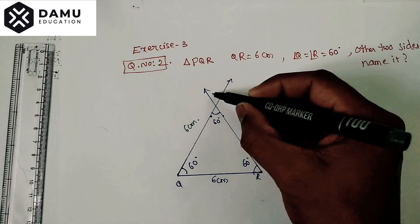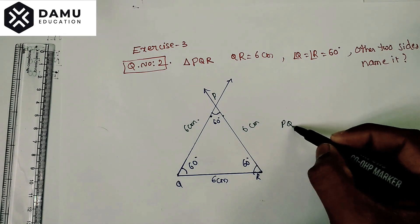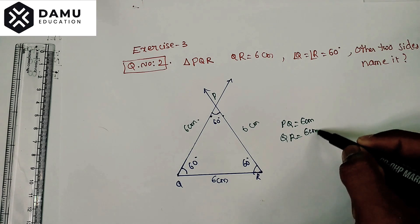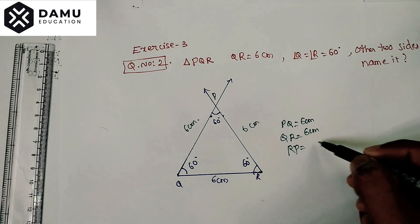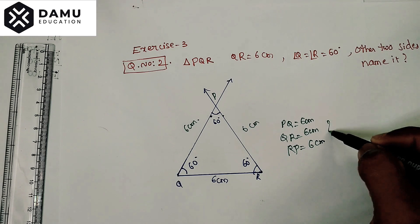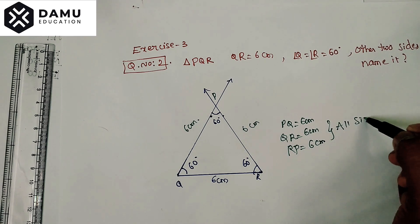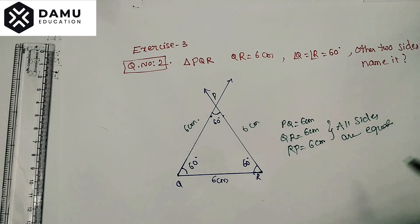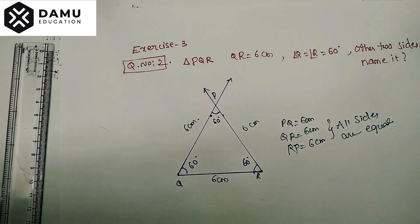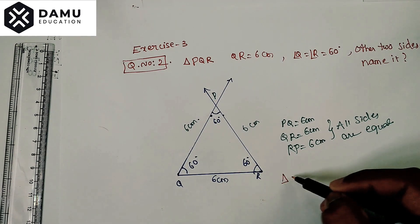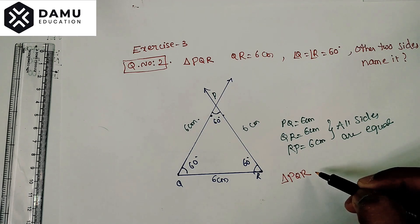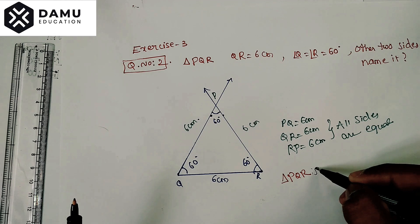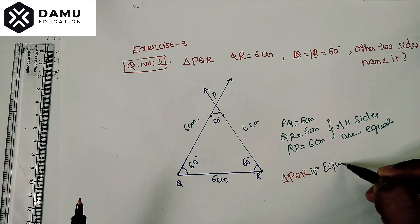So what is that? It is PQR. So PQ will be equal to 6 centimeters, QR will be equal to 6 centimeters, RP will be equal to 6 centimeters. All sides are equal, so the given triangle is triangle PQR, triangle PQR is an equilateral triangle.